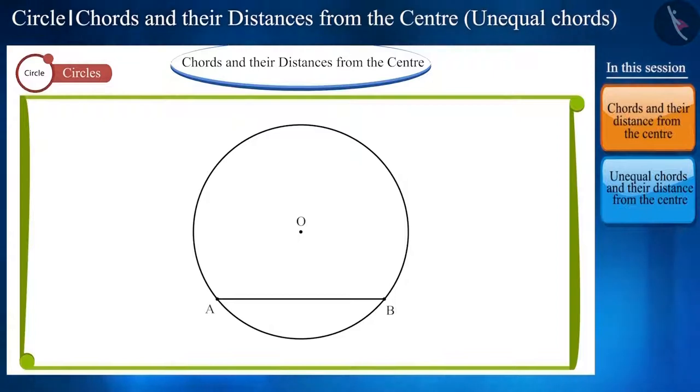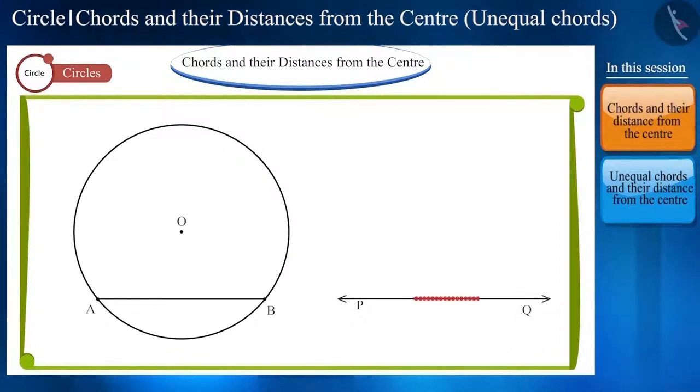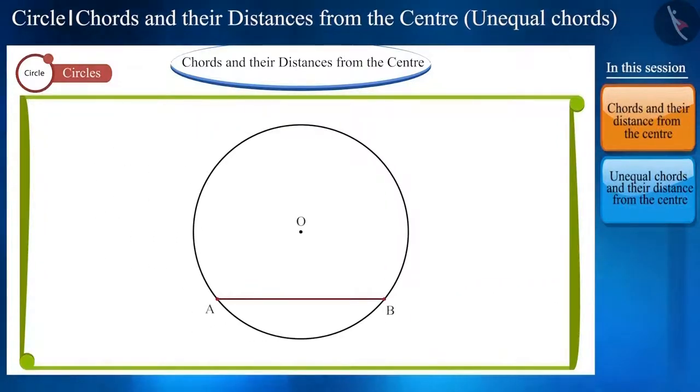Friends, we know that a line is made up of infinite points. Line segment AB is also made up of infinite points. And you can see that center O is not situated on line segment AB. To find the distance between them, if we join the infinite points on AB with the center O,